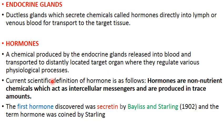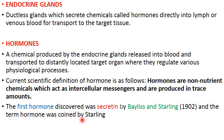Nowadays, the current definition of hormone is as follows: hormones are non-nutrients, meaning they don't produce or release any energy; they act as intercellular messengers, passing information to certain cells and regulating their functioning; and they are produced in trace amounts — very small amounts. The first hormone discovered was secretin, by Bayliss and Starling, and the term 'hormone' was coined by Starling.